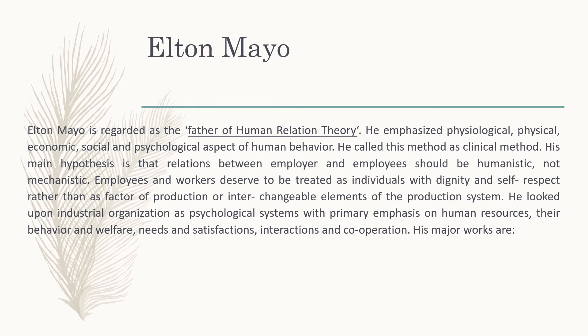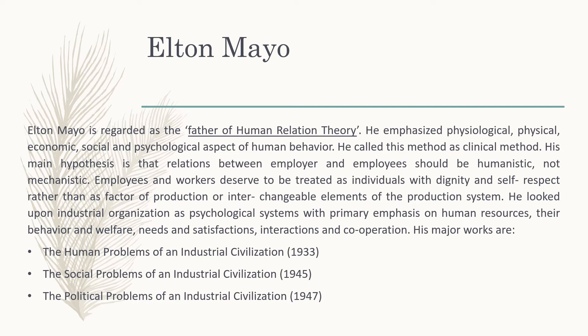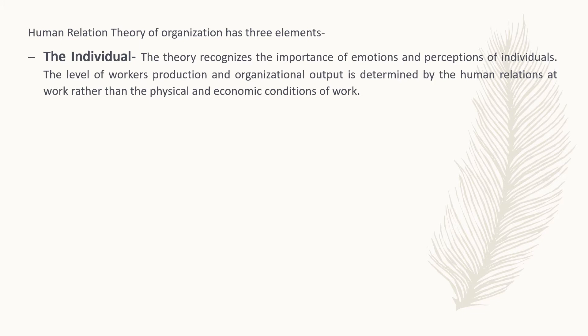Mayo looked upon industrial organization as a physiological system with primary emphasis on human resources, their behavior, welfare needs, satisfaction, interaction, and cooperation. In classical theory, humans or workers were viewed only in a mechanistic way and were not treated as human beings. In human relation theory, workers and employees are treated as humans. His major works are: 'The Human Problem of an Industrial Civilization' (1933), 'The Social Problem of an Industrial Civilization' (1945), and 'The Political Problem of an Industrial Civilization' (1947).